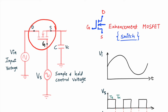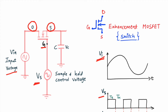In this part of the circuit, the main component is a switch — this is an enhancement MOSFET (E-MOSFET). It has three terminals: drain, gate, and source. To the drain terminal we are giving our input voltage — the analog input signal. To the gate terminal, which is the controlling terminal, we give the sample and hold control voltage Vs. To the source terminal we have connected one capacitor C, and this terminal goes to the non-inverting terminal of the op-amp.